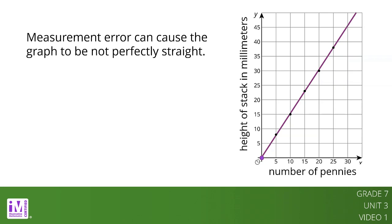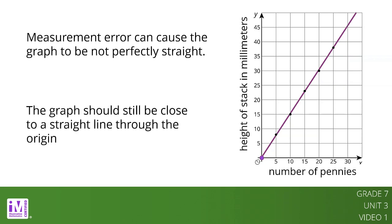However, the relationship shown on the graph should still be close to a straight line through the origin, and the quotients should be close to constant for it to be a proportional relationship with some measurement error.